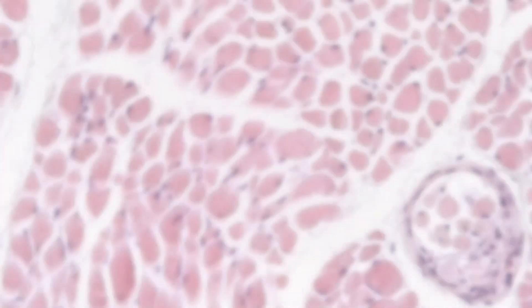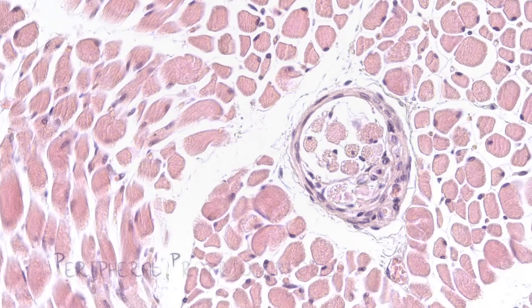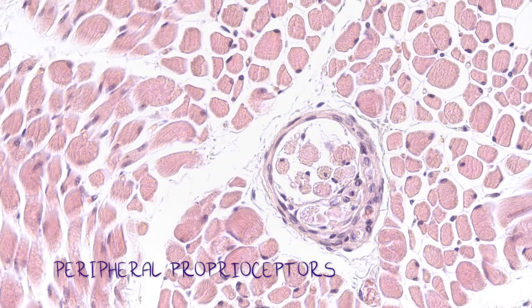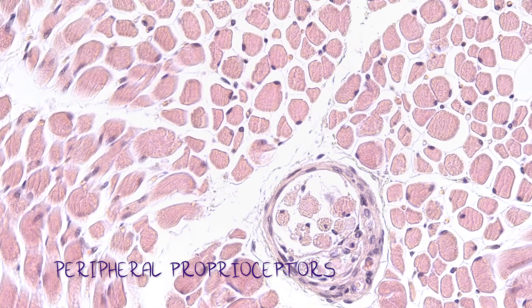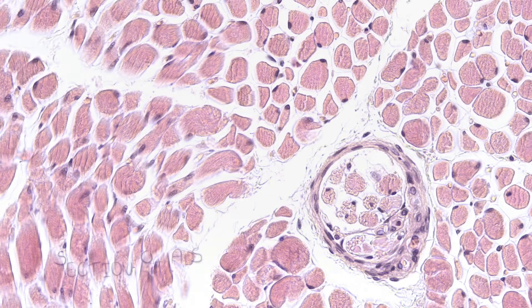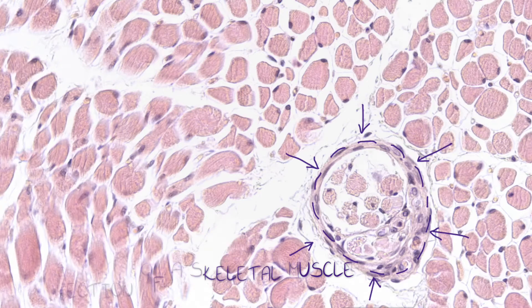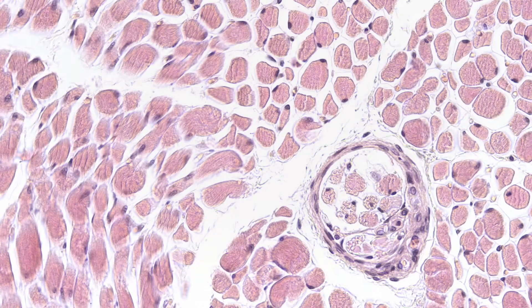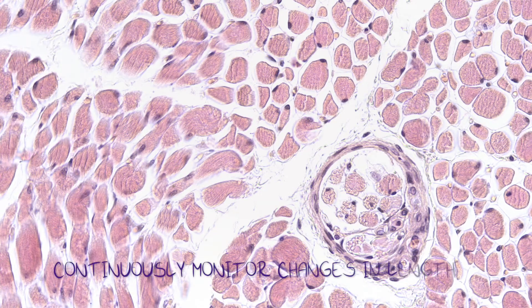They represent peripheral proprioceptors. We can find this receptor on the slide with the section of a skeletal muscle. Muscle spindle continuously monitors changes in length of the muscle.